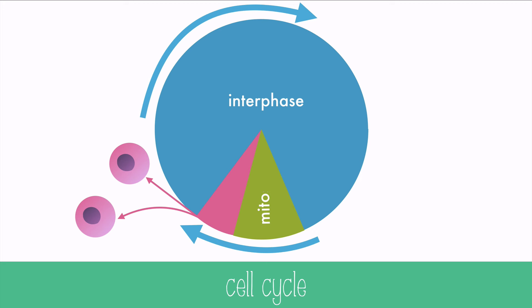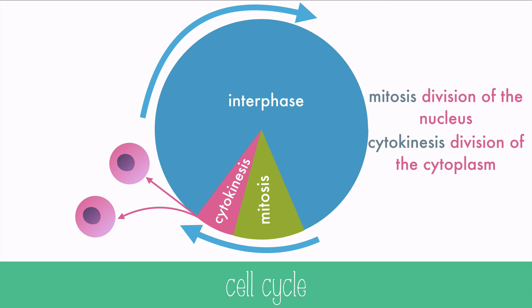Eukaryotic cells must divide the nucleus in a process called mitosis, and the rest of the cytoplasm must also divide in a process called cytokinesis.